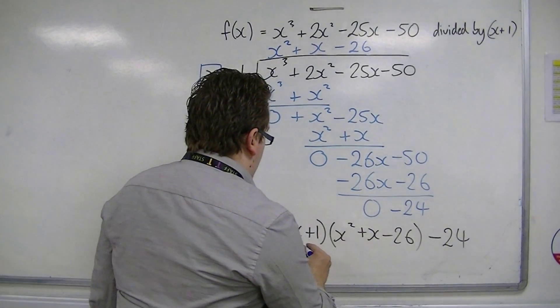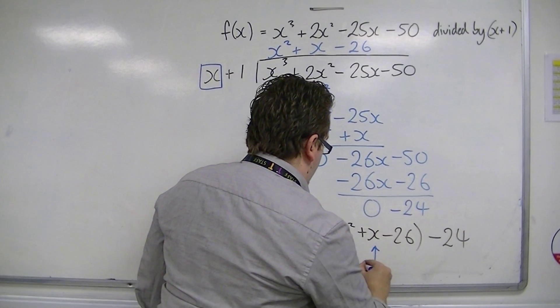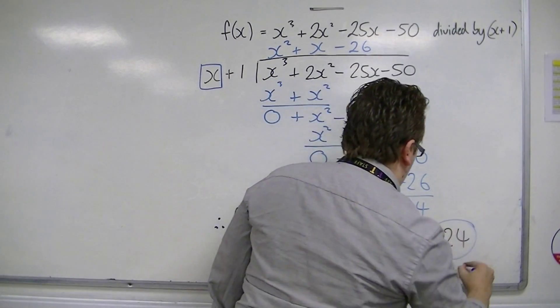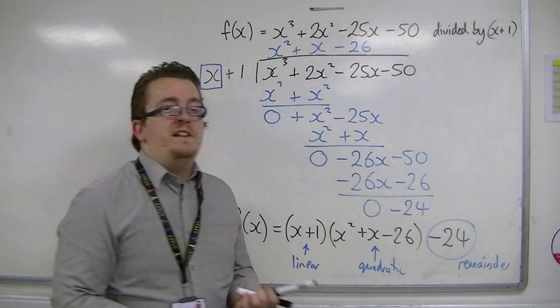So you have a linear term, a quadratic term, but you have this remainder. It hasn't factorized cleanly.